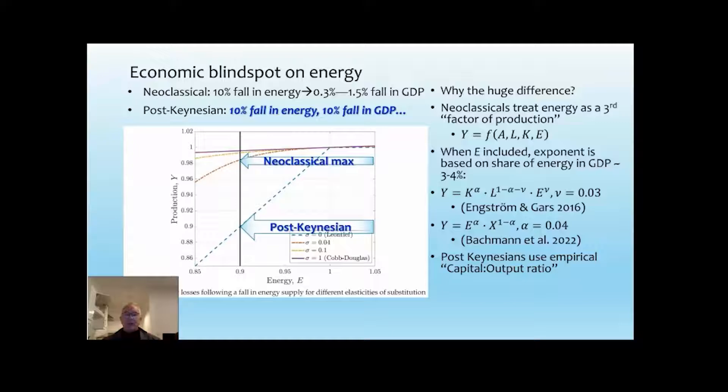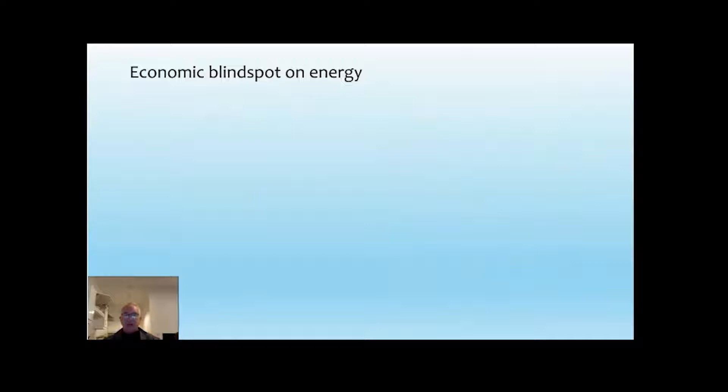Now, post-Keynesians simply use the empirical capital output ratio. It doesn't explicitly include energy. I'll show how it implicitly does shortly. But that turns out when you put it into the same framework as Bachmann has done for energy versus other inputs there, it means a one-for-one relationship between change in energy and change in GDP.